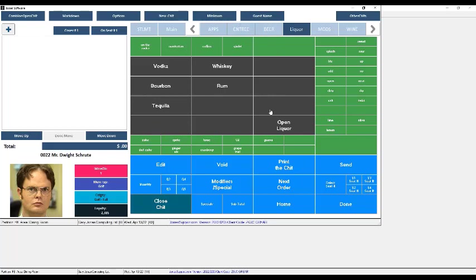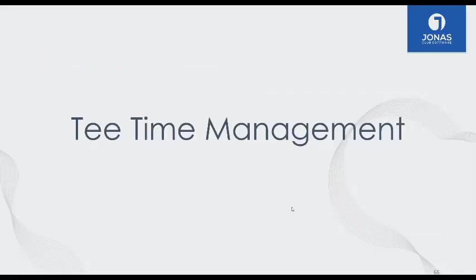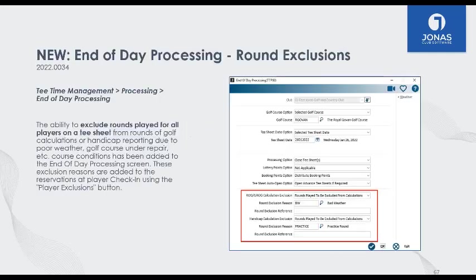Moving over to the Tee Time module. We've made a change to the end-of-day process so you can exclude all tea time statistics for the day from your handicap reporting and round-of-golf rolls. For example, if you're doing repairs to your golf course and only a few holes are open, or bad weather means members only played three holes, you don't want those incomplete rounds contributing to their total rounds of golf. You can now exclude those from their total.